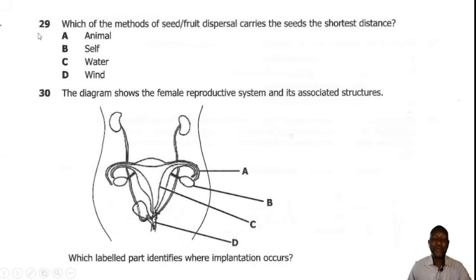Question 29. Which of the following methods of seed or fruit dispersal carries the seed the shortest distance? Among the types of fruit or seed dispersal, the one which carries the seeds the shortest distance is self-dispersal. So the correct answer is B.